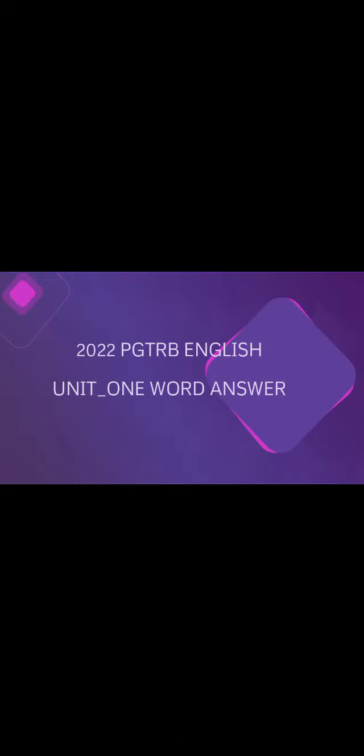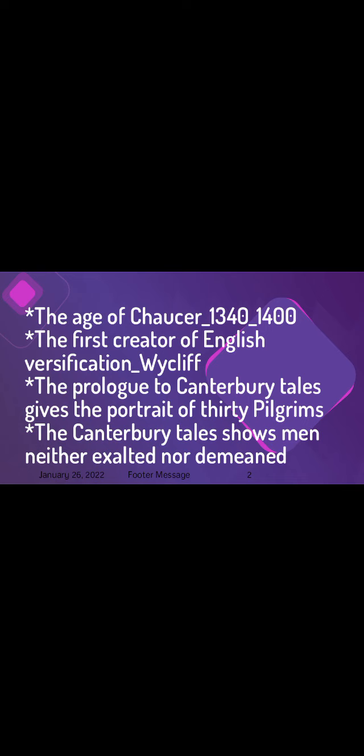Hi everybody, welcome to my channel Easy Way to English. I am going to discuss the topic 2022 PG TRV English Literature Unit 1: Modern Literature, one word answer. I hope this video helps you recall what you learned. Let's get started. The Age of Chaucer: 1340 to 1400.